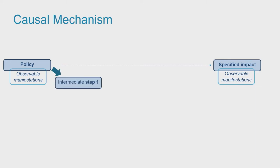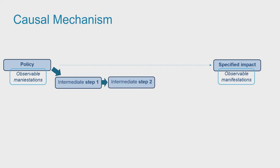Once the beginning and the end of the process have been specified, we can think about the intermediate steps through which the impact is actually triggered. In most cases, a sequence of individual steps needs to occur for a policy to achieve its impact. For example, a carbon tax makes products or services with a high climate impact more expensive. This then leads to changes in consumer demand, which leads to investment decisions by companies in low-carbon technology, and this ultimately reduces greenhouse gas emissions and mitigates climate change. To know whether a carbon tax really has led to emission reductions and climate mitigation, we need to investigate whether each of these steps occurred and caused the next one.